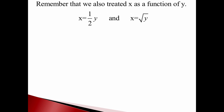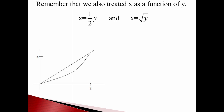Now let's switch gears and think about what we did when finding the area between two curves — treating x as a function of y, doing everything sideways. We could think of y equals 2x as x equals one-half y, and the parabola y equals x squared as x equals square root of y. Now we draw our cut horizontally. But if we rotate around the x-axis, this little rectangle gets rotated around — we're cutting it parallel to the axis, not perpendicular as before. That gives us something very different.